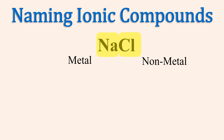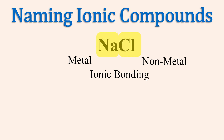In general chemistry, bonding between metals and nonmetals is called ionic bonding. This is bonding between ions, or charged particles. For ionic bonding, we simply name the species.